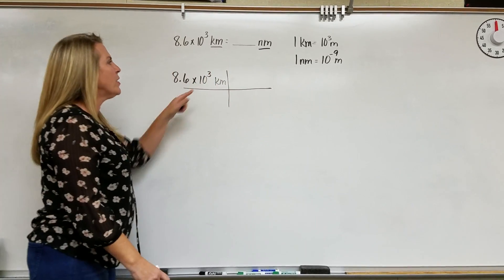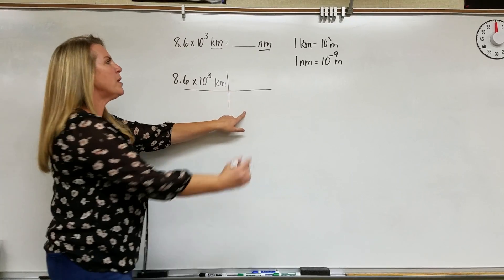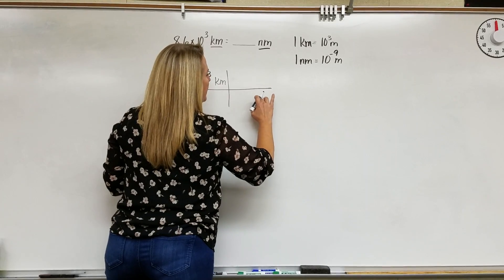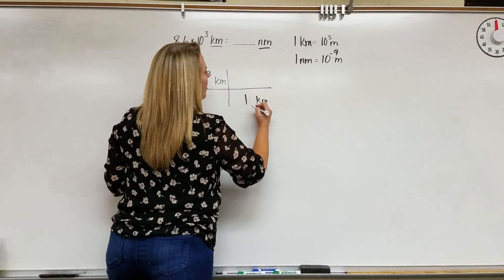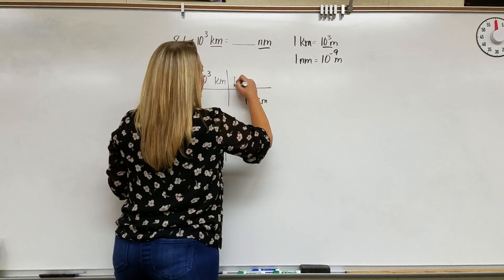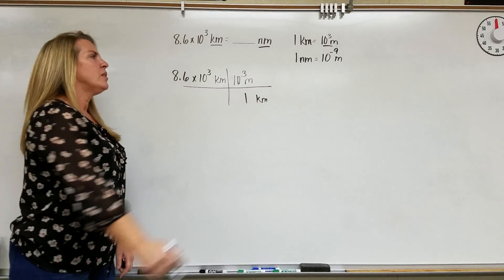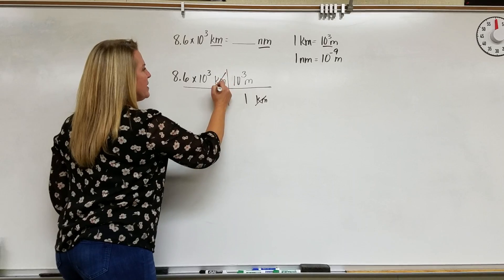If I have kilometers upstairs, we want to put kilometers downstairs. And looking at my ratio, 1 kilometer goes downstairs, and 10 to the third meters goes right above it. This will cancel my kilometers.